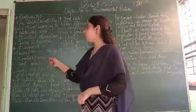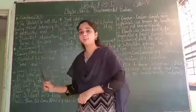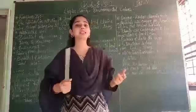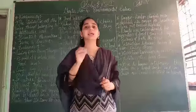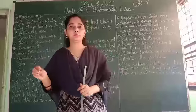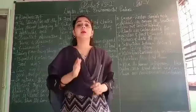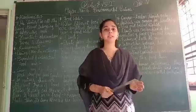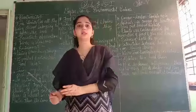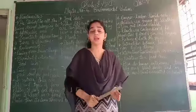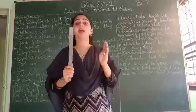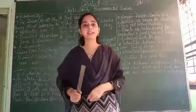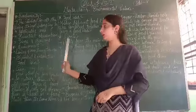Next is environment. In the environment, we have living and non-living things. Living things are things which are alive — for example, human beings, plants, and animals. Non-living things are things which are not alive — for example, air, water, sunlight, soil, etc.